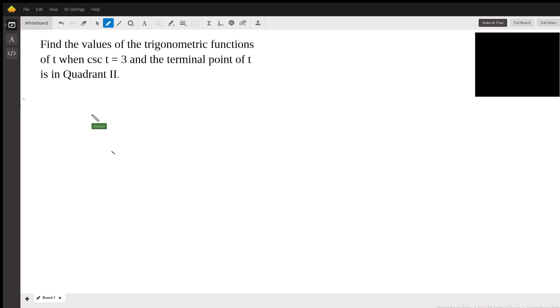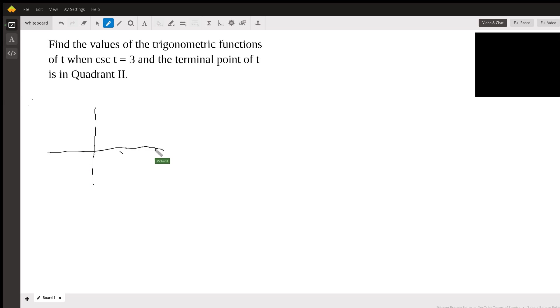Okay, so here we have our four quadrants: quadrant one, two, three, and four. We're told the angle is in quadrant two, and so right away we draw our right triangle in quadrant two. Now the x value is going to be negative, and the y value is going to be positive here in this quadrant.